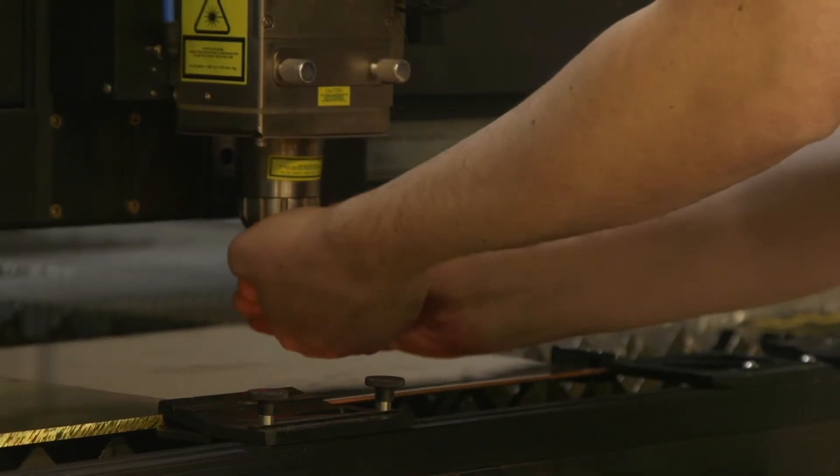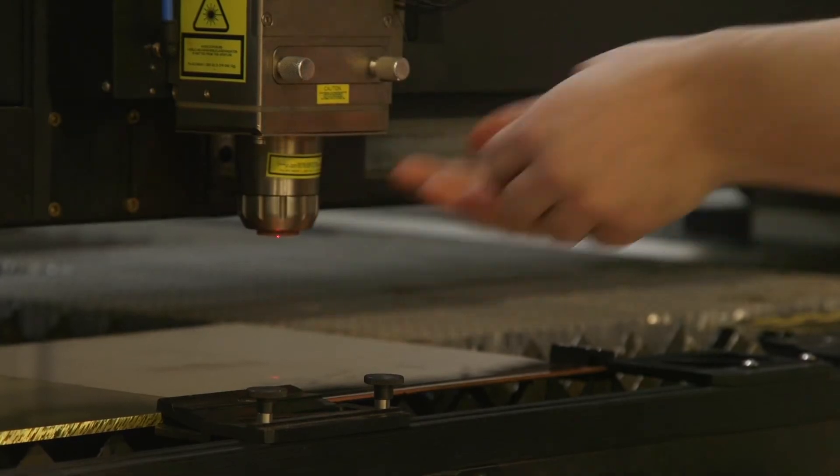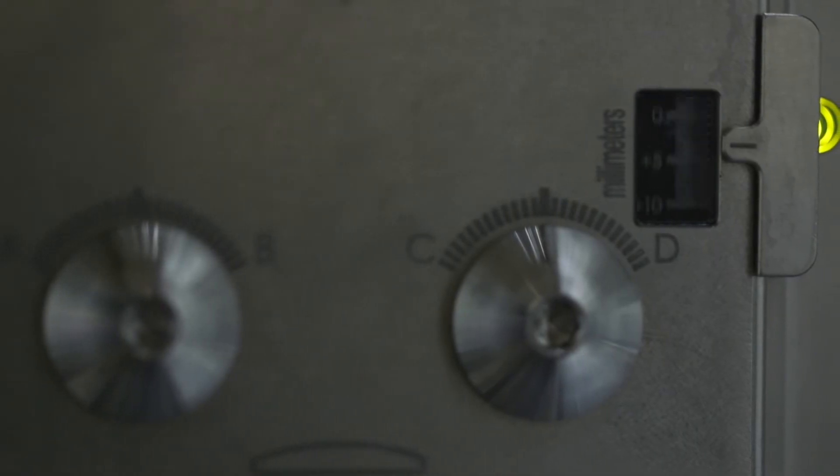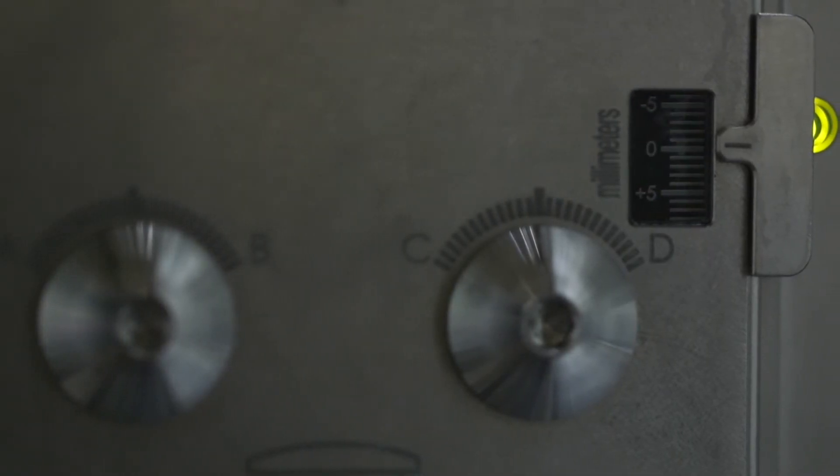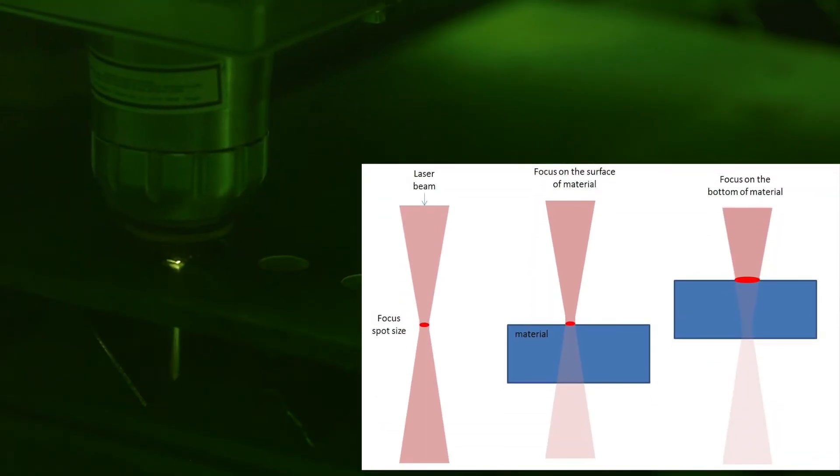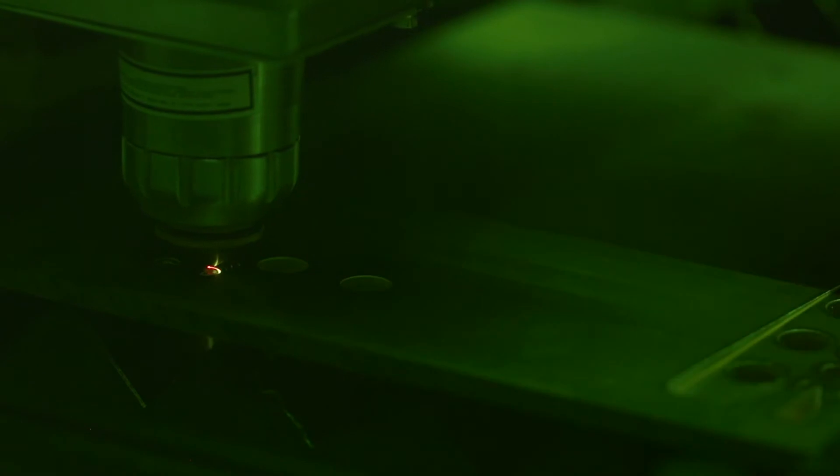You want to set the focus position of the laser beam as close as possible to the surface of the metal during the piercing and cutting. That's because you want the minimum effective beam size on the surface of the metal to have the highest power density.